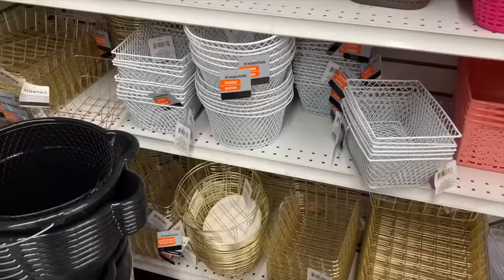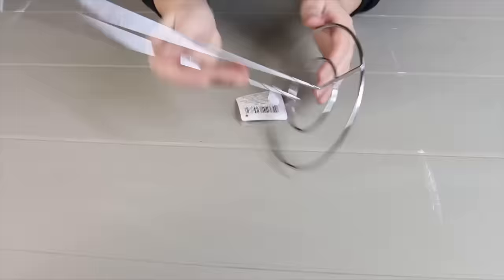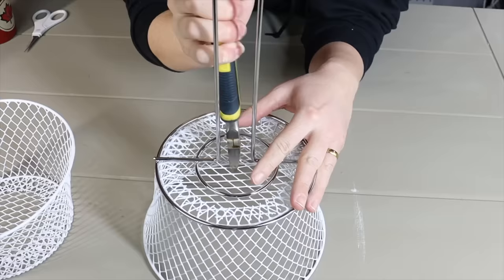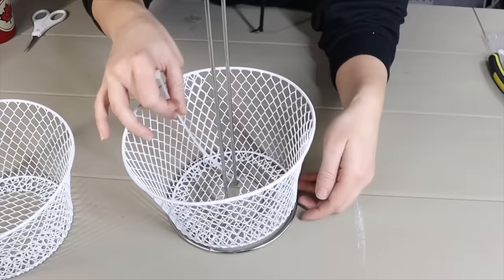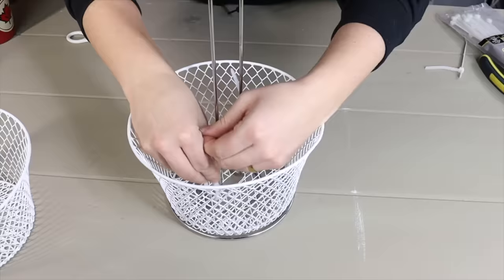Next time you're at Dollar Tree, scoop up some of the white wire baskets and grab yourself a paper towel holder. Then I'm going to take the paper towel holder and place it on the bottom and then cut out the wire basket just in the middle. You're going to slide it over top and secure it in place with some zip ties at the bottom.